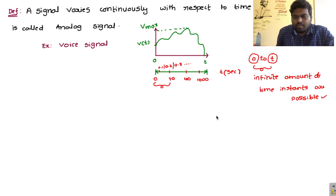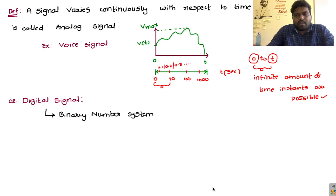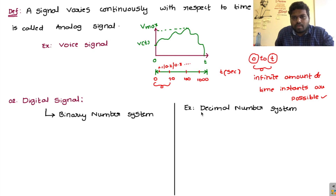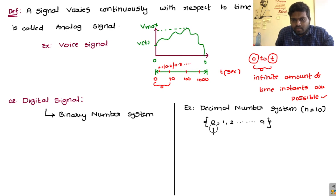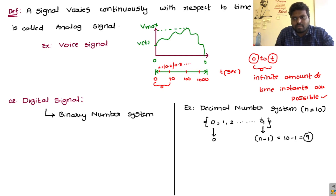Next we discuss digital signals. Before going to digital signal, we discuss certain things related to digital. Digital signal completely depends on the binary number system. Before going to binary, let's first discuss the decimal number system. Decimal numbers range from 0 to 9, so n equals 10. The maximum number is n minus 1, which is 10 minus 1 equals 9. Decimal number system we already know.